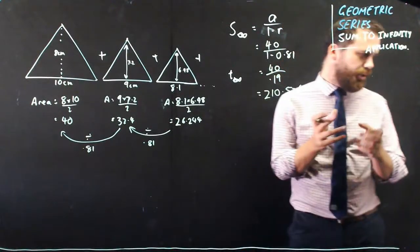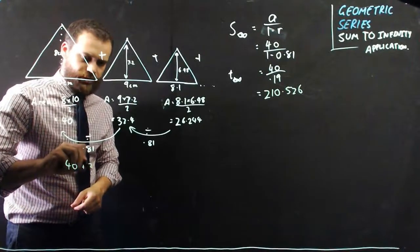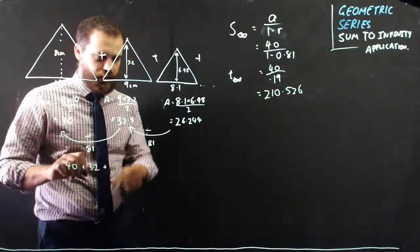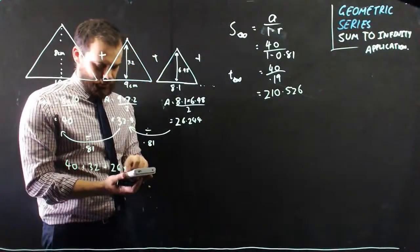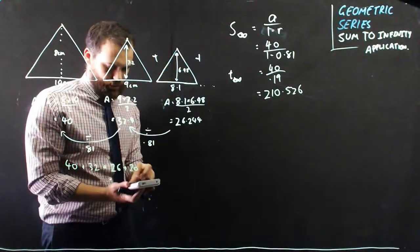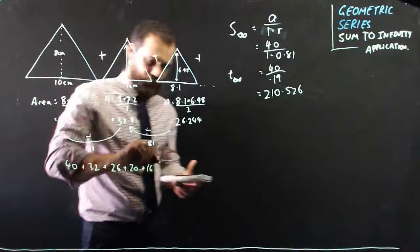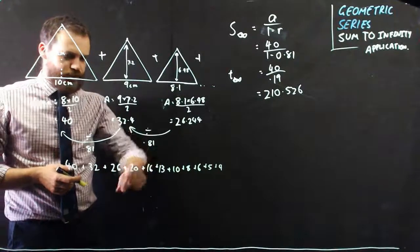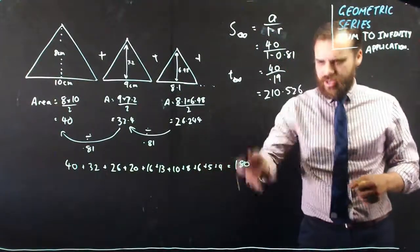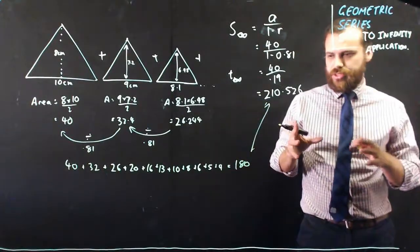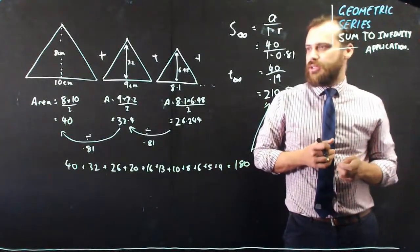I just want to convince myself that's true, so I'll do a little back-of-the-envelope check. This one's 40, that one's close enough to 32, and that's close enough to 26. The next one is about 26 times 0.8, which is about 20, then about 16, then about 13, then about 6. Adding those up: 40 plus 32 plus 26 plus 20 plus 13 plus 6 gives me about 180. There's still a few more terms — 3, 2, 1, and decimals — so I'm pretty close to 210. I'm happy with that back-of-the-envelope check. That's a sum to infinity.